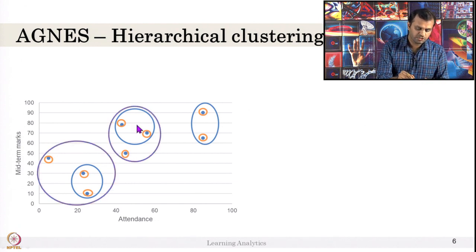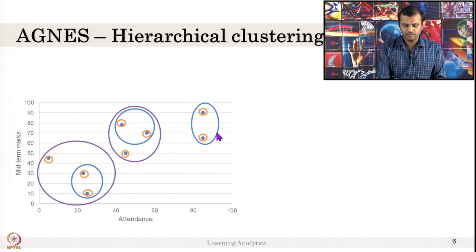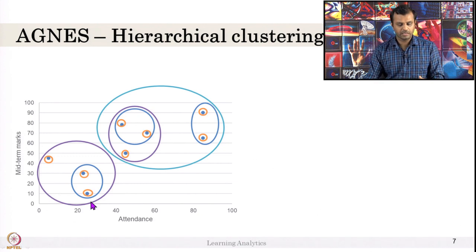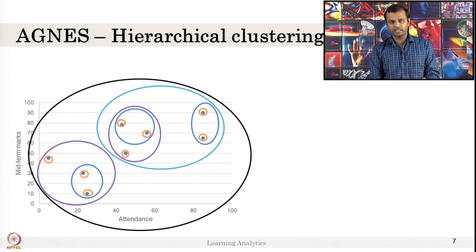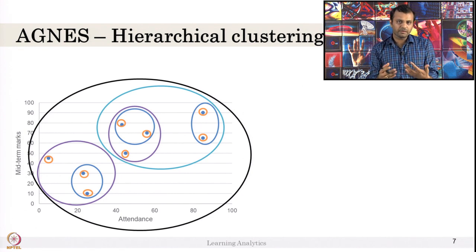Now, two clusters are similar to each other compared to others, so they are merged. After step 3, we have 3 clusters. At step 4, another two clusters combine, giving us 2 clusters, and at step 5 we have one big cluster. The number of steps does not depend on the number of data samples; instead, it depends on the behavior of the data. So 8 data samples could converge in 3, 6, or 7 steps based on the data.